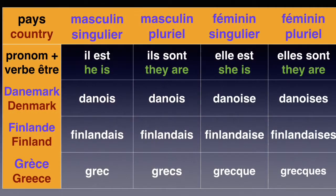Il est danois, so he is Danish. Elle est danoise, we add an E at the end. Il est finlandais, he is Finnish. Elle est finlandaise, we add an E. Il est grec, he is Greek. Elle est grecque — this is a bit particular, we add QUE at the end to show it is feminine.